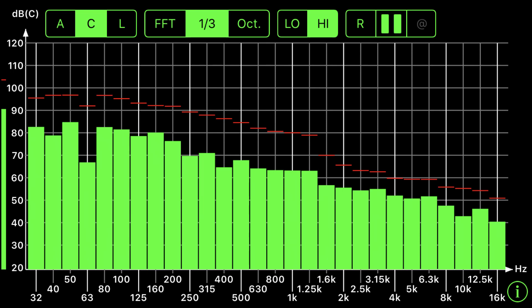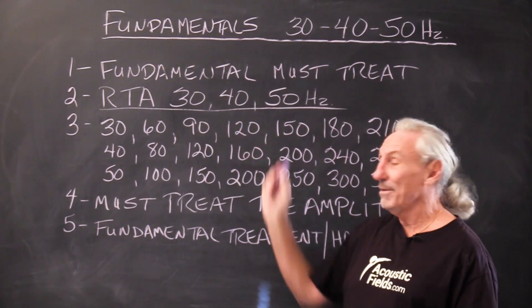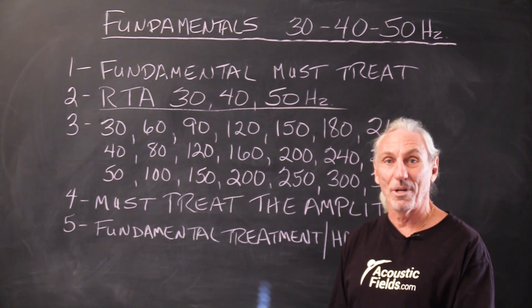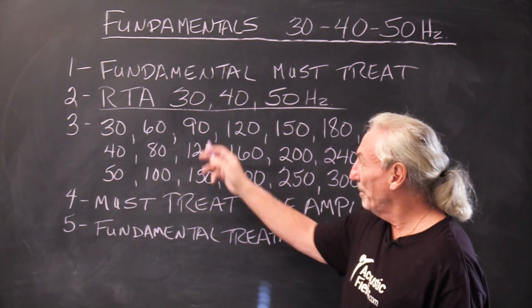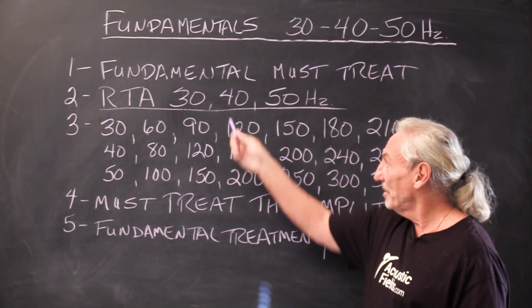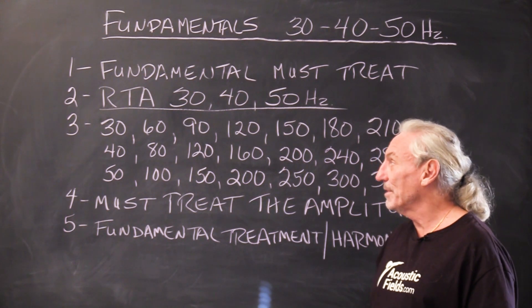We look at an RTA, which is a real-time analyzer. We see on that that there's a starting point of 30, 40, and 50 cycles. Now you can get analyzers that go a lot lower, but for purposes of this discussion and illustration and education, let's stick with the 30, 40, and 50 cycle energy.